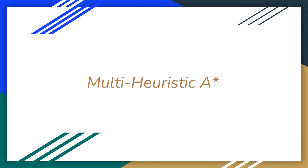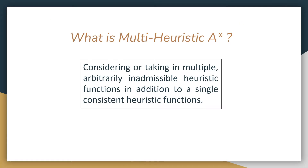Hello everyone. I am going to talk about multi-heuristic A star. Multi-heuristic A star is a search in which multiple arbitrarily inadmissible heuristic functions are considered in addition to a single consistent heuristic. These heuristics are used simultaneously to search in a way that preserves the guarantees of completeness and bounds on sub-optimality.